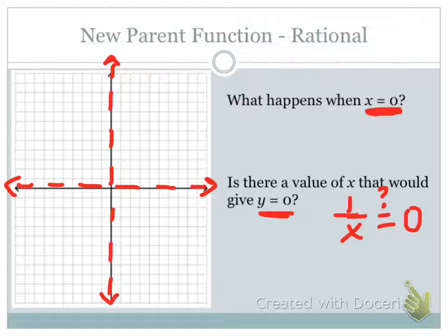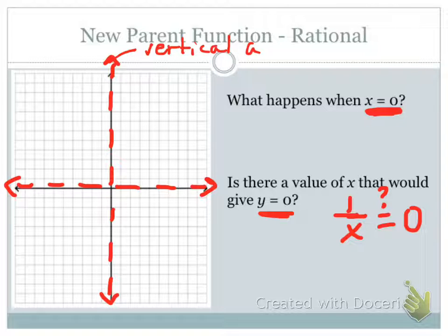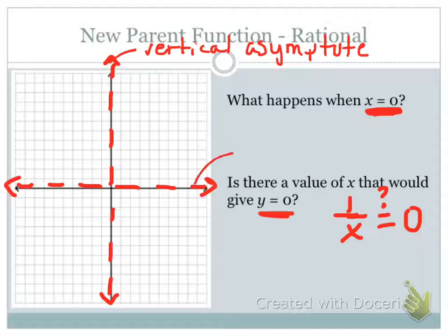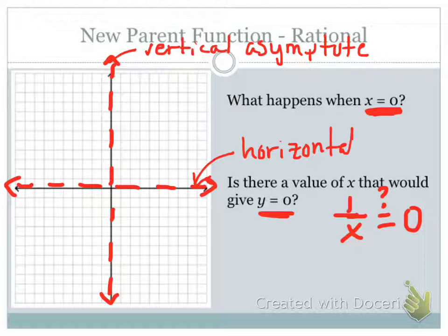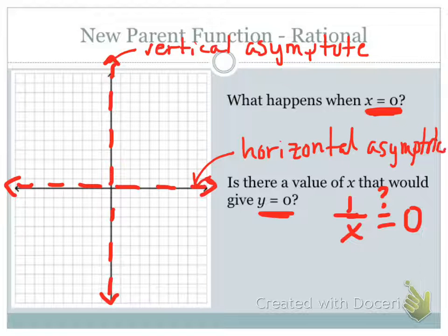So what we've done here is put in two asymptotes: the vertical asymptote based on what makes our denominator 0, and the horizontal asymptote. These are key characteristics for our graph. They're not actually part of the graph, but they certainly help us to make the graph.